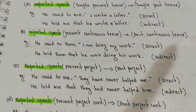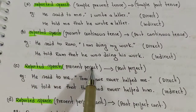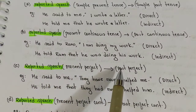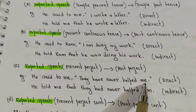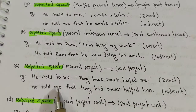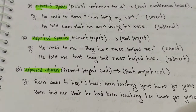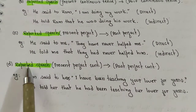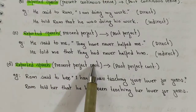If your reported speech is in present perfect tense, then it will change into past perfect. Example: 'He said to me, they have never helped me.' This becomes: 'He told me that they had never helped me' — past perfect tense.